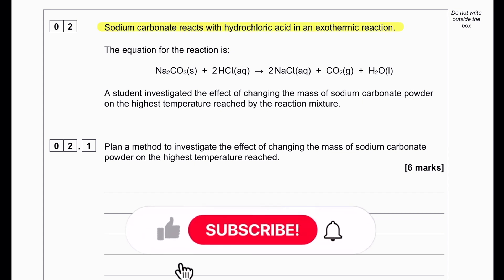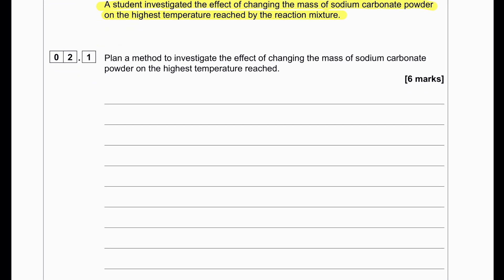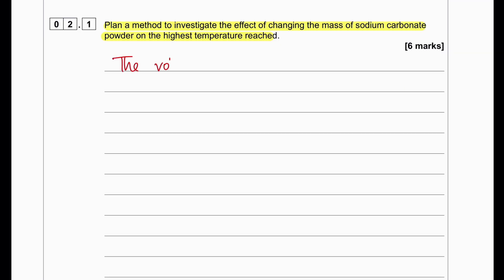Sodium carbonate reacts with dilute hydrochloric acid in an exothermic reaction. A student investigated the effect of changing the mass of sodium carbonate powder on the highest temperature reached. Plan a method to investigate this. The student can measure a fixed volume of hydrochloric acid using a measuring cylinder, 25 cm3 or 50 cm3.